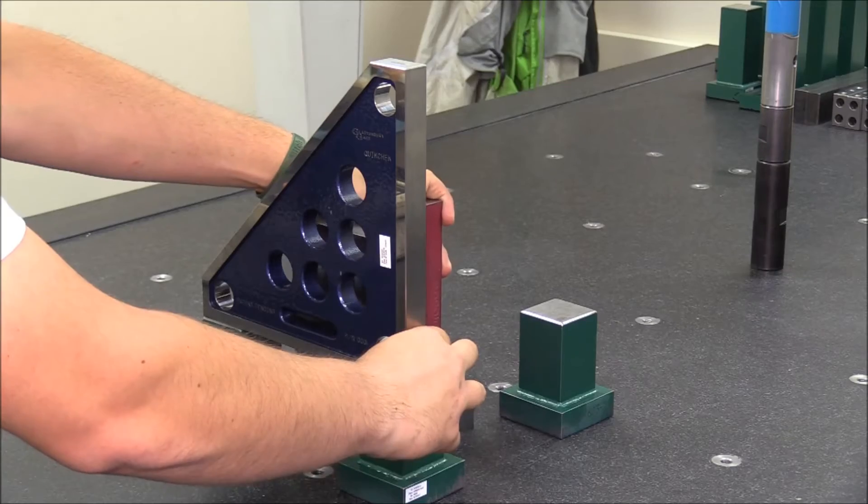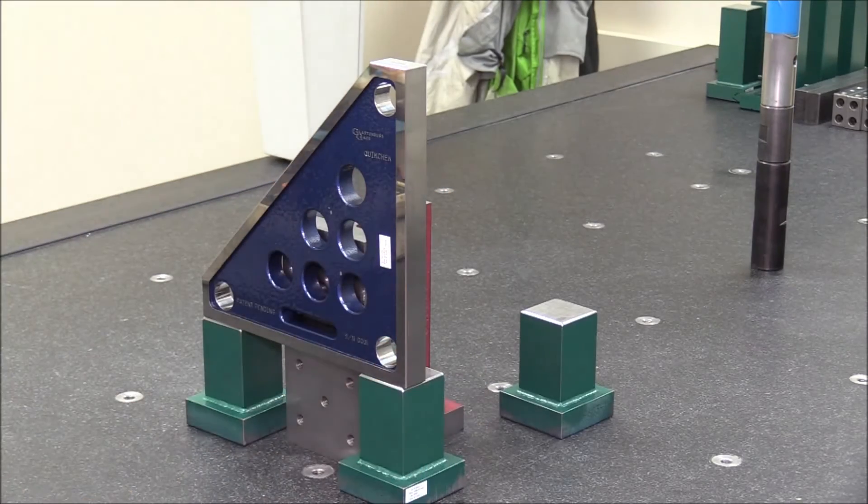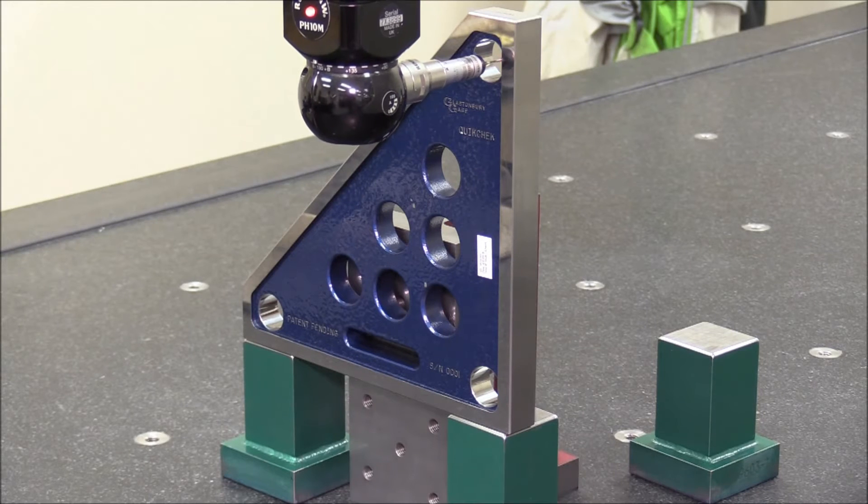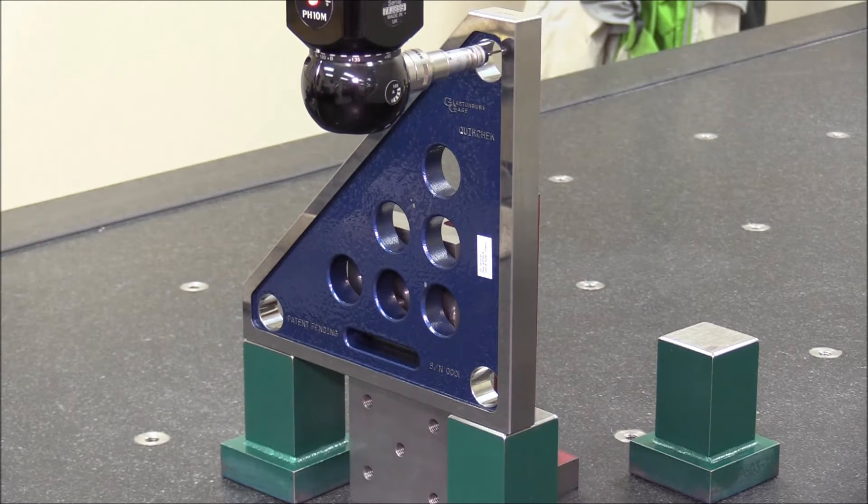The GSG Quick Checks are constructed of 440C stainless steel and are triple stabilized and hardened to 60-62 Rockwell.